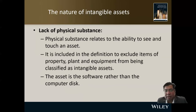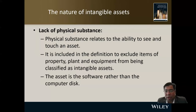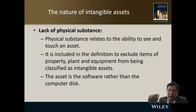The third characteristic is the lack of physical substance — you cannot see or touch an intangible asset. You cannot touch a franchise agreement, a music right, or a software license. This criterion excludes items of property, plant and equipment. For example, computer software is the intangible asset, while the computer hardware falls under property, plant and equipment.